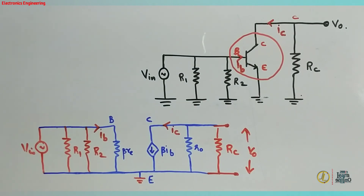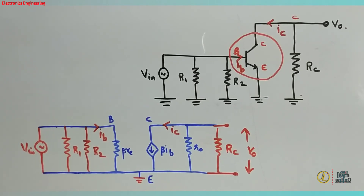Now we will start with AC equivalent circuits in common emitter configuration. Let me show the gain expressions.